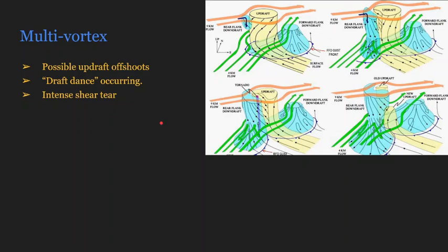The second possibility is that a draft dance could be occurring, a term that I have just invented right here. The updraft, in its full glory here in the third image, wants to be cuddled and loved and respected. And the downdraft, specifically the rear flank, is a two-year-old that wants to do whatever it likes to.